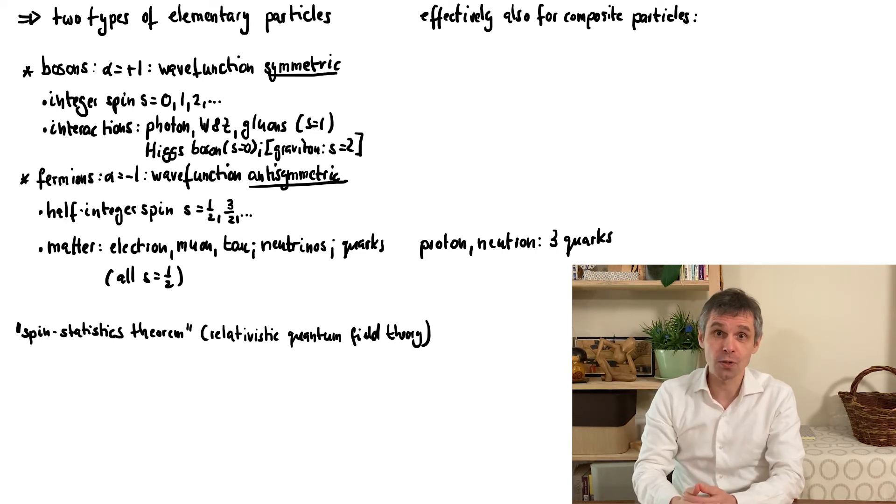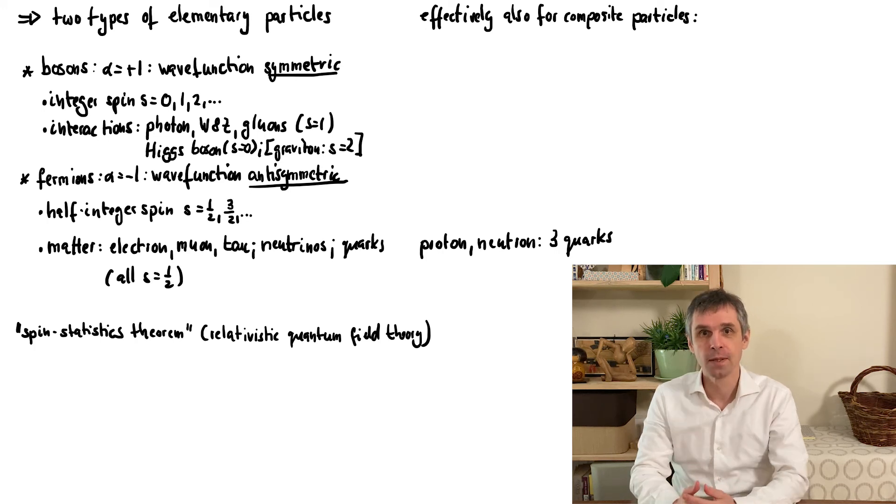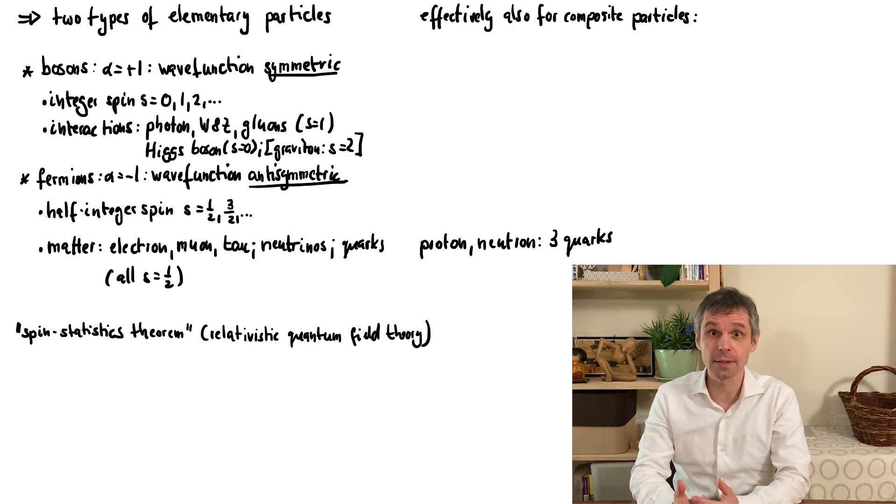Similarly, a neutron is also a combination of three quarks, but a different one. And so different neutrons are again indistinguishable, but they can of course be distinguished from a proton, say by their neutral electric charge. So more generally, a composite particle made out of an odd number of fermions would still behave like a fermion. And indeed it still then has a half-integer spin over all, such as one-half for a proton or a neutron. But when we combine an even number of fermions, we effectively obtain a boson with an integer spin.